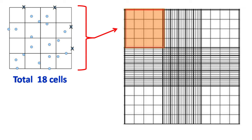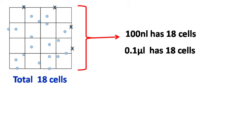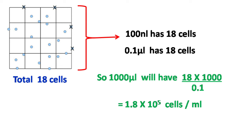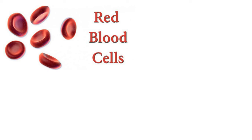Okay, let's take an example. Suppose total number of cells that you calculate in the large square is 18. This means 100 nanoliters has 18 cells. In other words, 0.1 microliters has 18 cells. So the total number of cells in 1000 microliters, that is 1 ml, is gonna be 1.8 into 10 raised to 5. Isn't this easy?